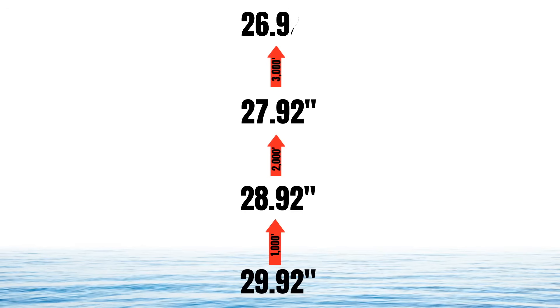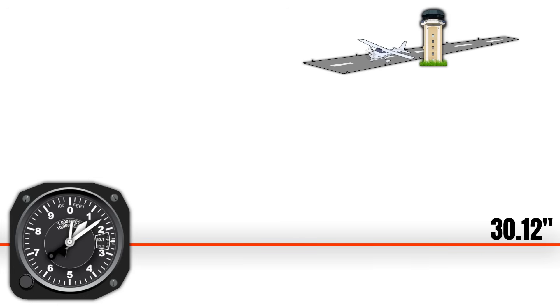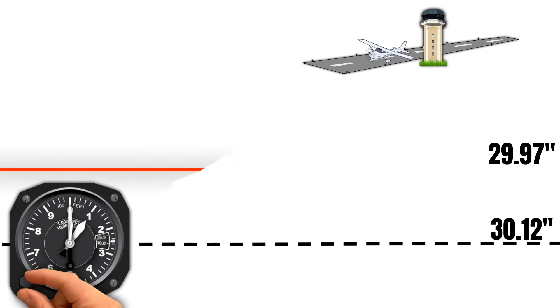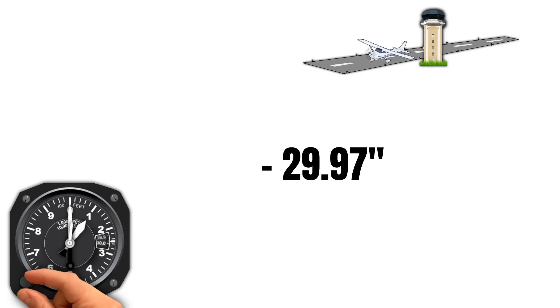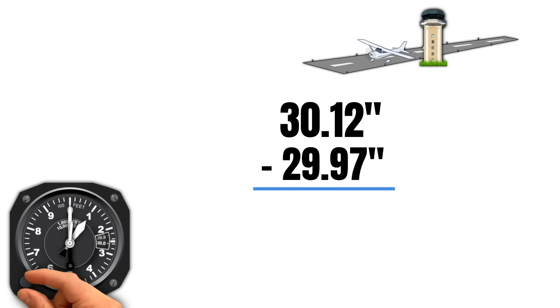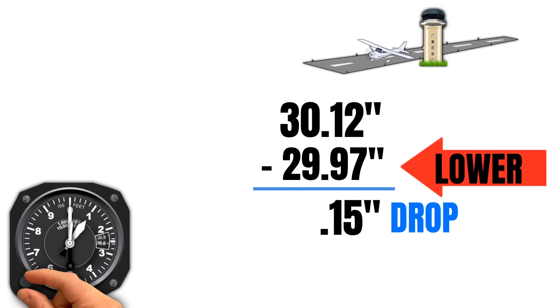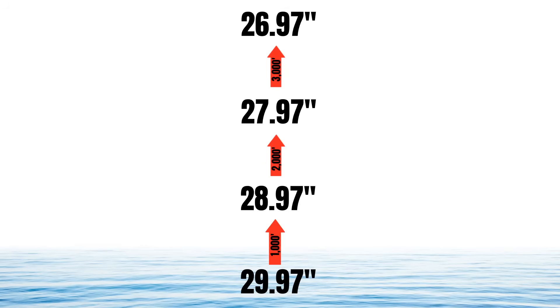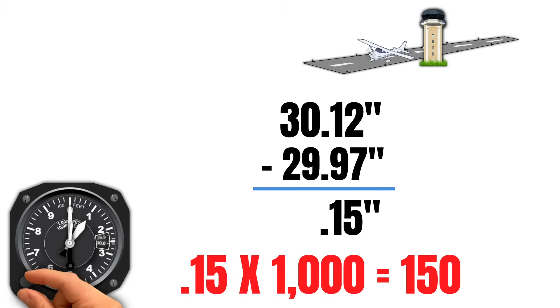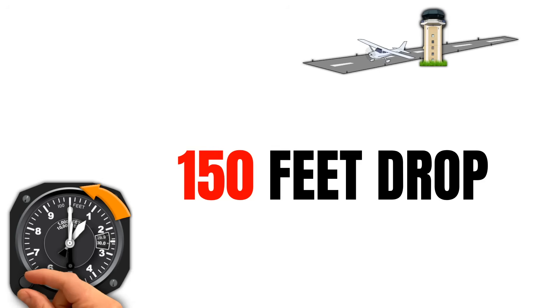On the test, they're going to ask you how much your indicated altitude went down when you adjust the altimeter. This is actually pretty simple to figure out. The key is to remember that air pressure decreases 1 inch of mercury every 1,000 feet of altitude. Our altimeter was set at 30.12. When ATC gives us an altimeter setting of 29.97 inches, all we have to do is subtract 29.97 from our original setting of 30.12. Our altimeter changed 0.15 inches of mercury. We put in a lower altimeter setting so our indicated altitude dropped. To figure out how much it dropped, we multiply 0.15 inches by 1,000 because air pressure decreases 1 inch every 1,000 feet. 0.15 times 1,000 is 150, so our indicated altitude went down 150 feet.